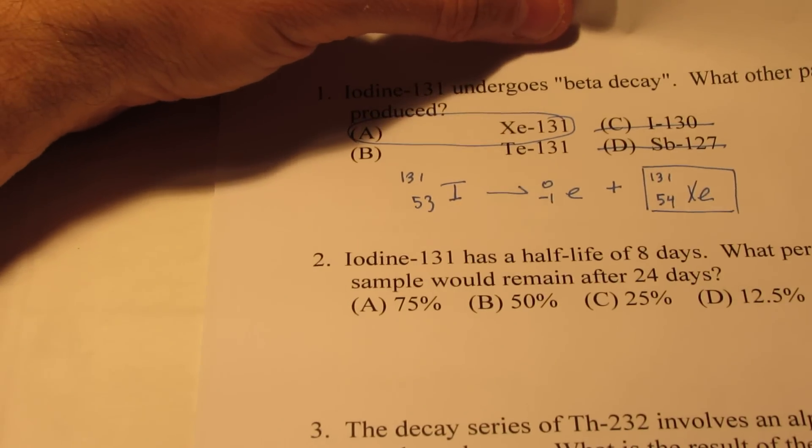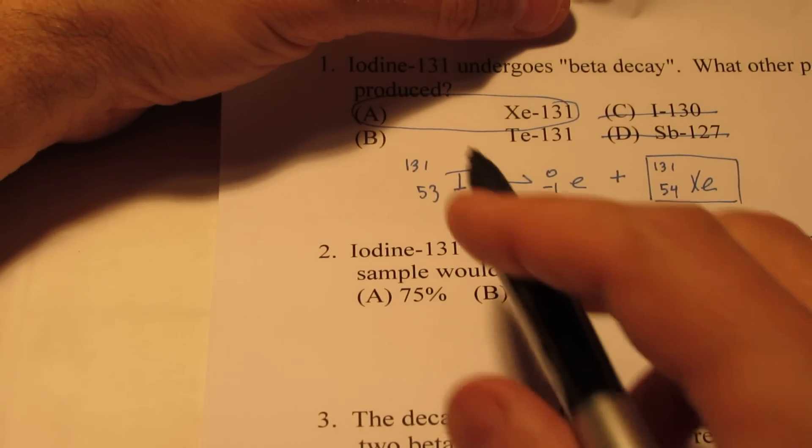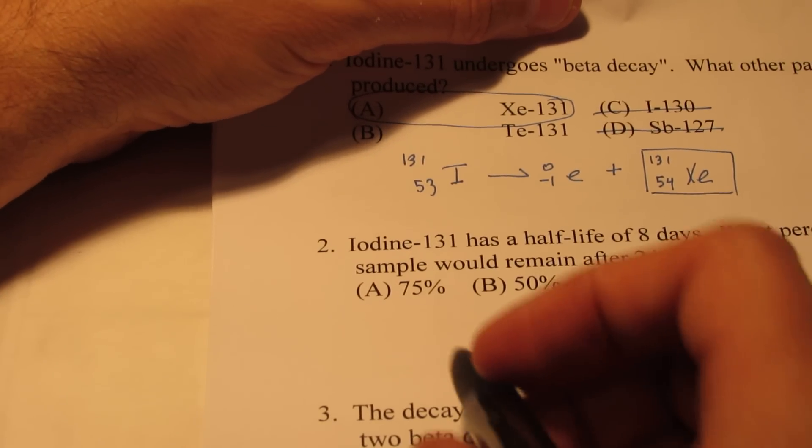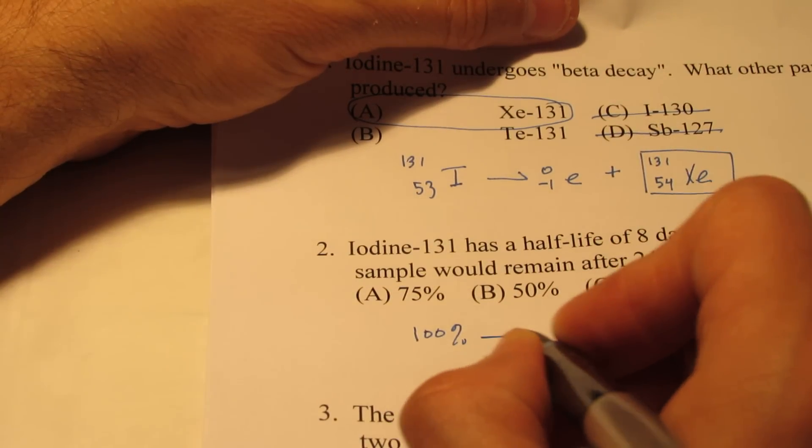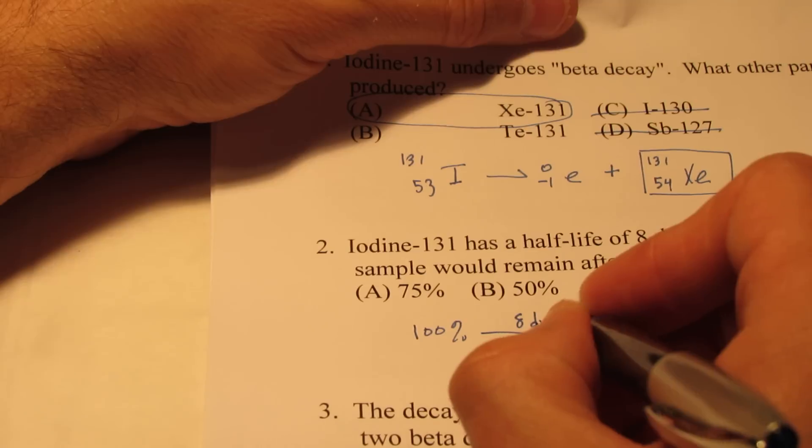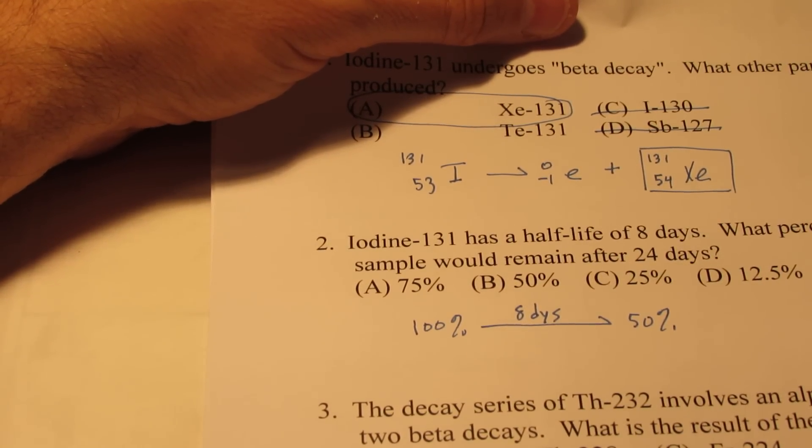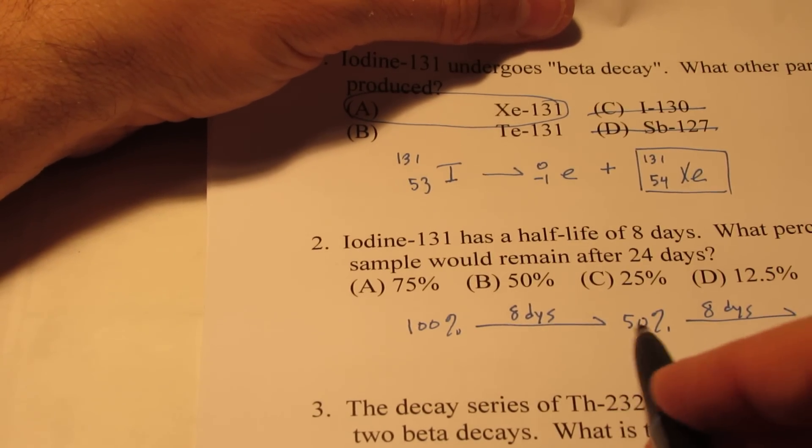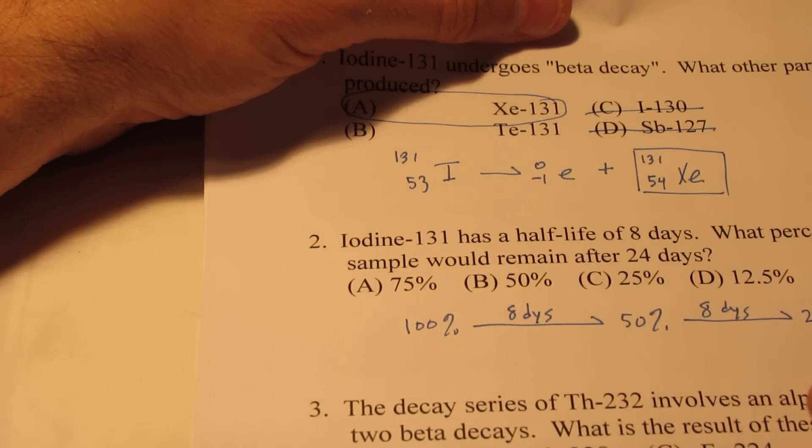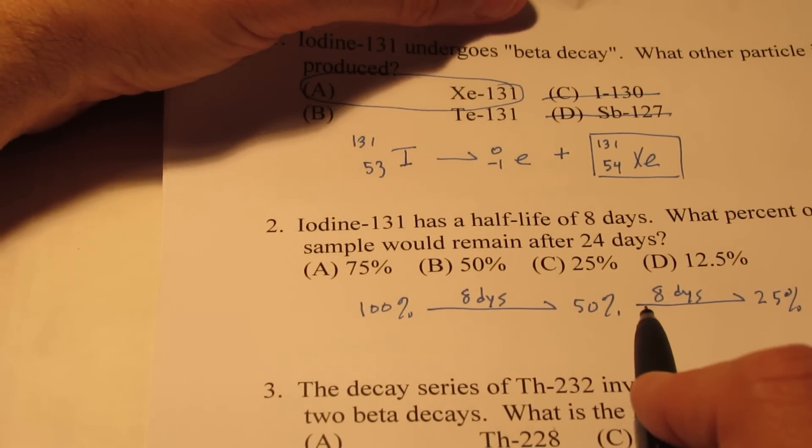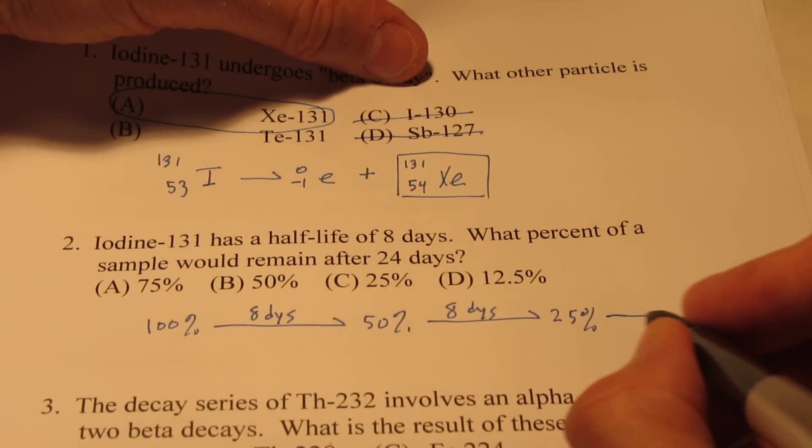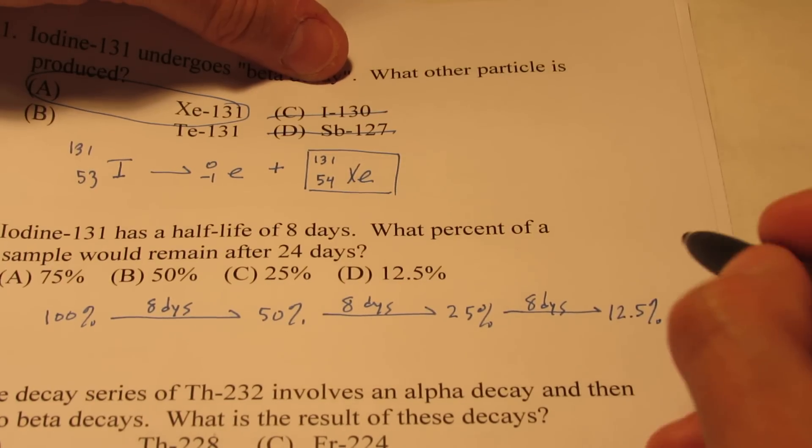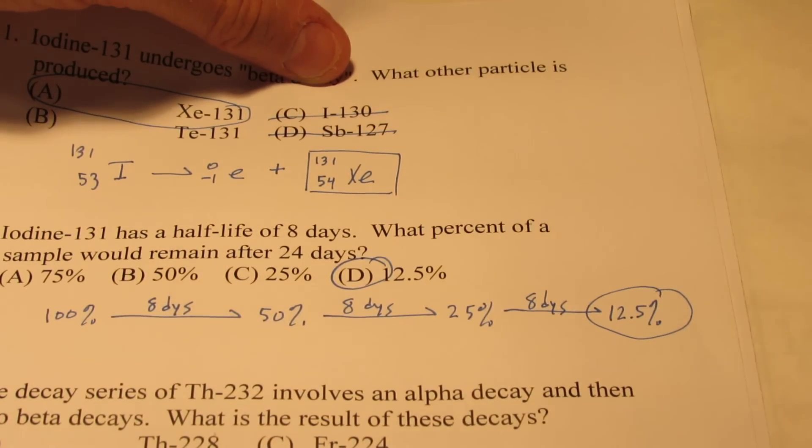Well let's take a look at number two. Number two is a half-life problem. So iodine-131 again has half-life of eight days. What percentage of the sample would remain after 24 days? Well let's see. If we begin with 100% after one half-life or eight days, wouldn't I have 50% remaining? After another eight days, how much would I have left? It would be half of 50%, which is 25%. So that's a total of 16 days so far. Now we have to go for 24 days. So that's one more half-life of eight days. And that would give us 12.5% that would remain. So my answer would be letter D for number two.